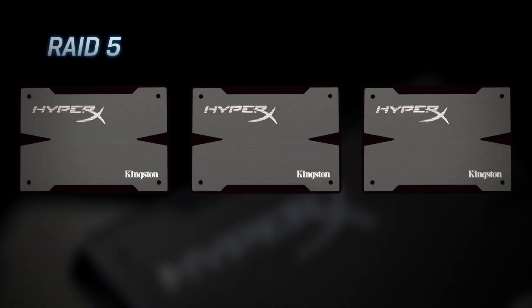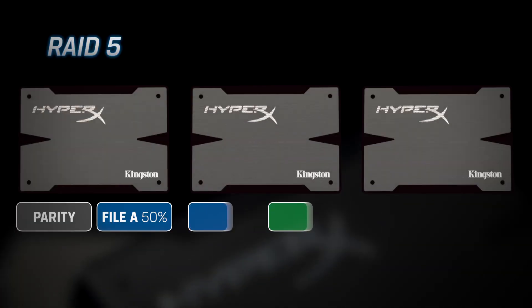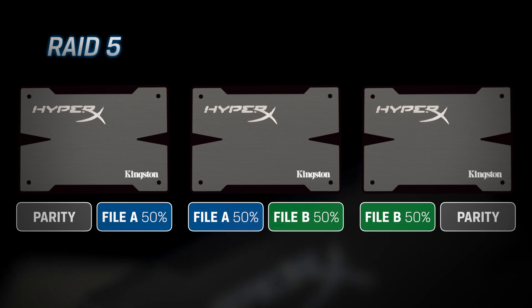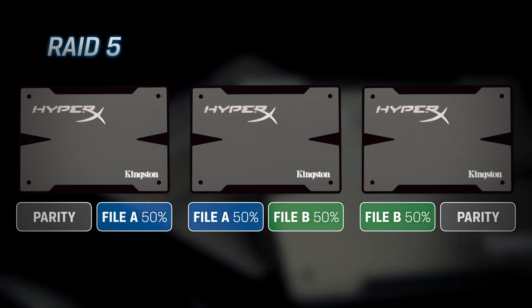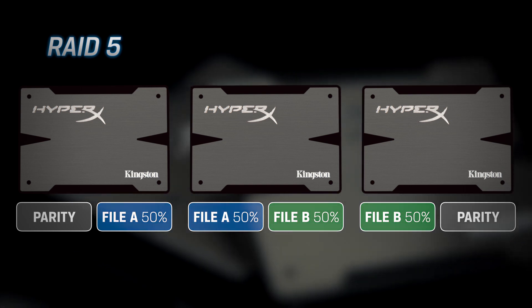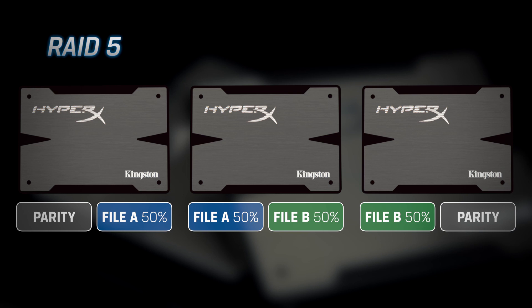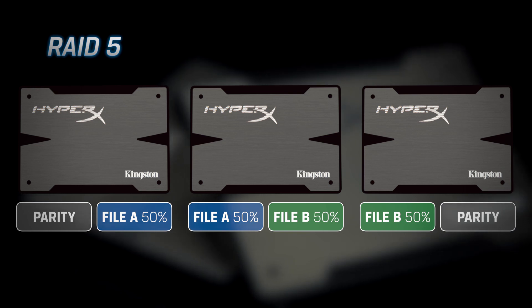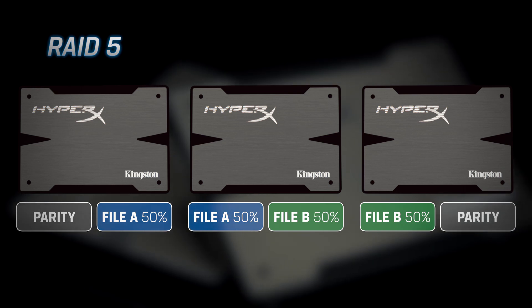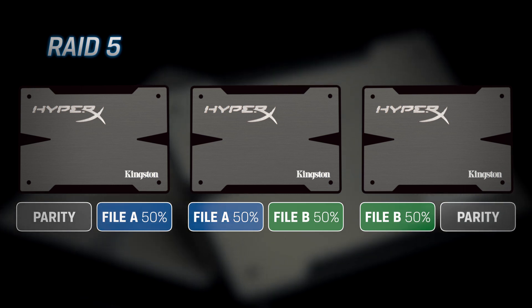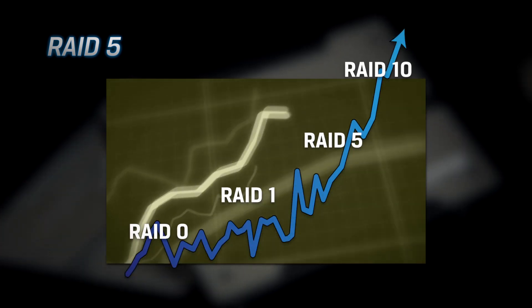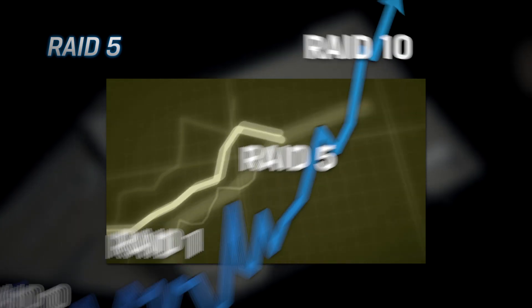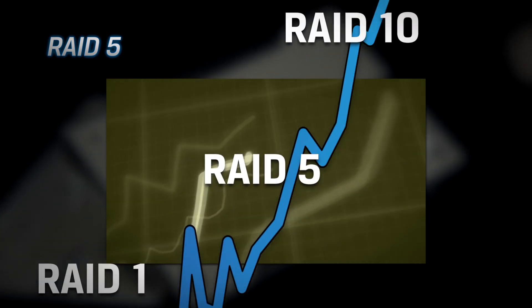RAID 5 is striping with distributed parity. The advantage of RAID 5 is it's cost effective to implement because you only lose the capacity of a single drive, regardless of the number of drives in the RAID group, and you have redundancy in the event of a drive failure.